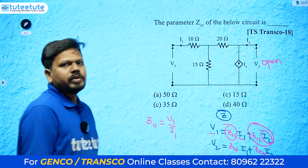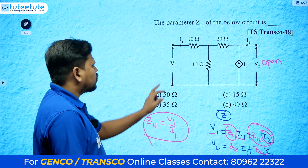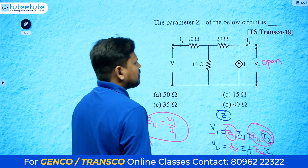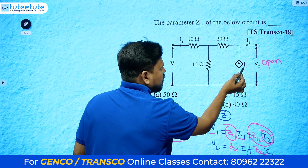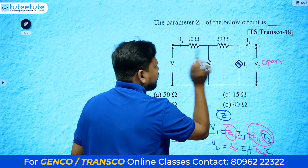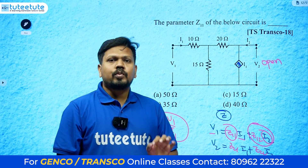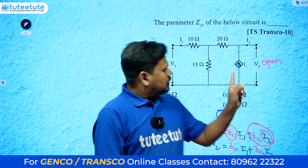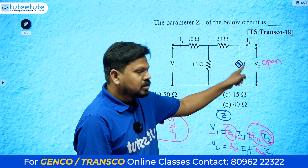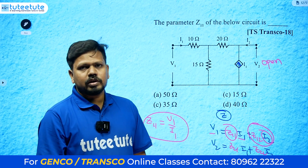With i2 equals 0 (open circuit at output), z11 equals v1 by i1. We only need the v1 and i1 relationship. Whenever a dependent source is present, identify the dependent parameter — here a dependent current source depends on i1. Check whether any relation exists between the dependent source and its controlling variable.